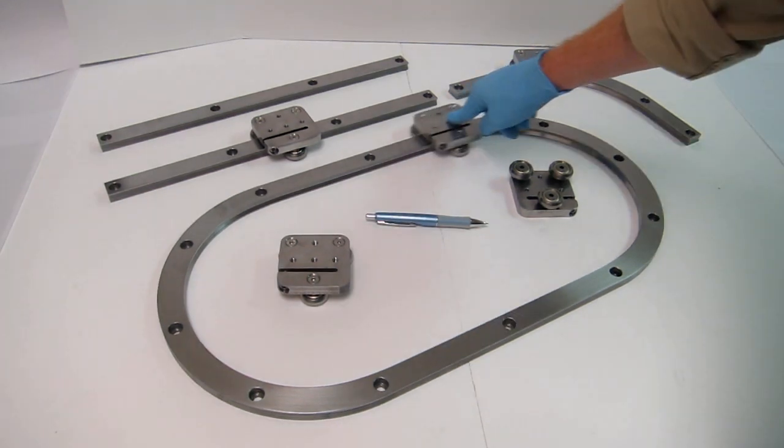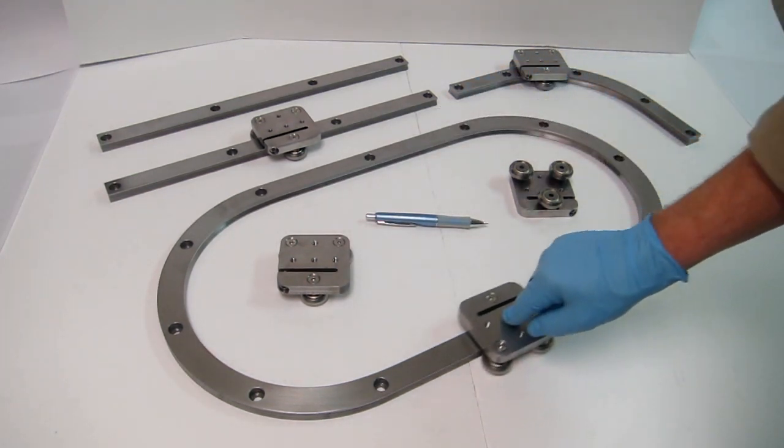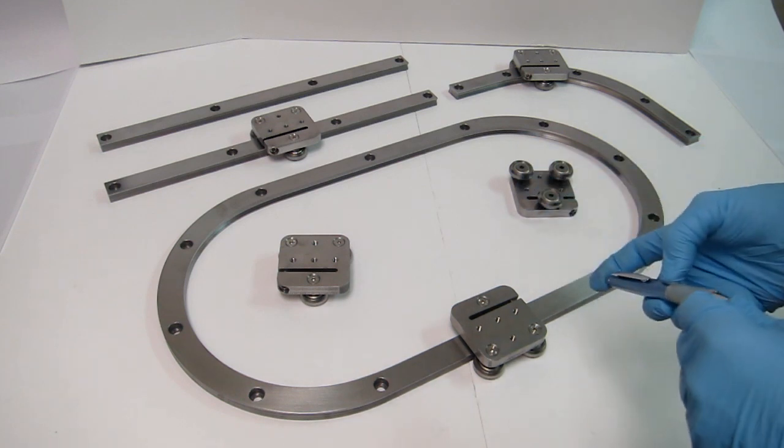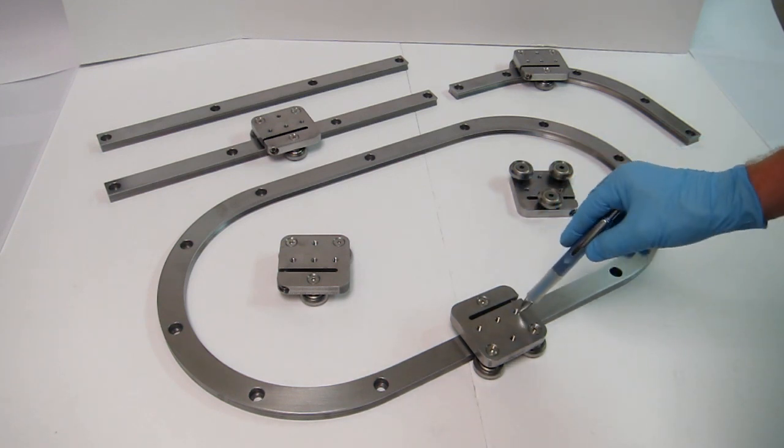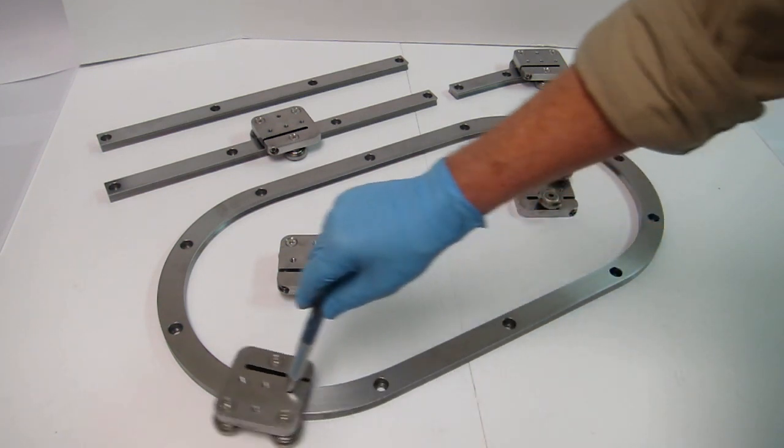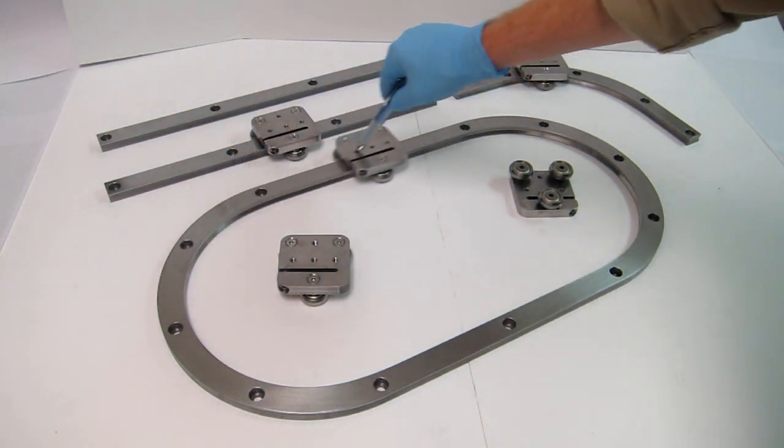Today we are featuring our new CR40 series curved rail linear guide product. It has a unique feature of very smooth carriage motion along both the straight and curved track sections.